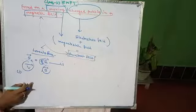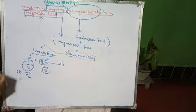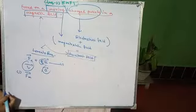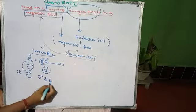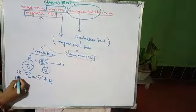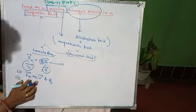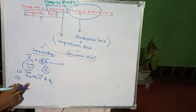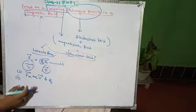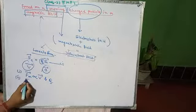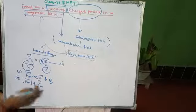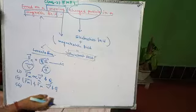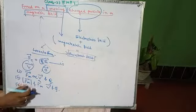Observation one: the magnitude of the force F_m exerted on the charged particle is proportional to both v and Q. So the magnetic force is directly proportional to the velocity of the charge particle and the amount of charge. Observation two: the magnitude and direction of F_m depends on both v vector and Q — if we vary v and Q, the force F_m will also vary.